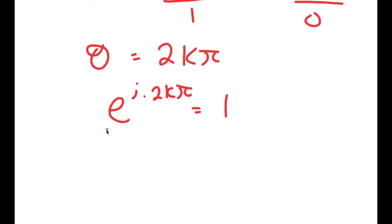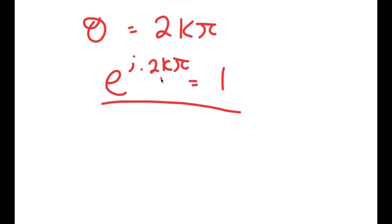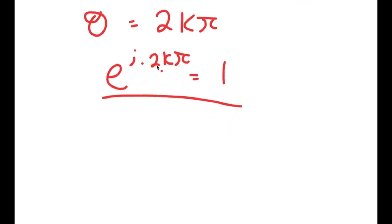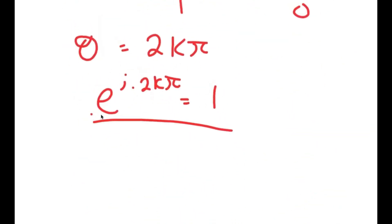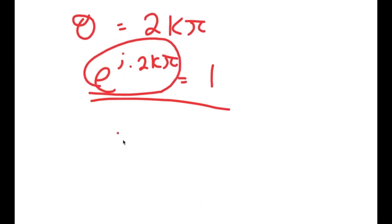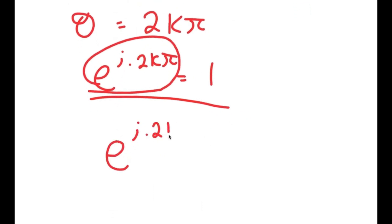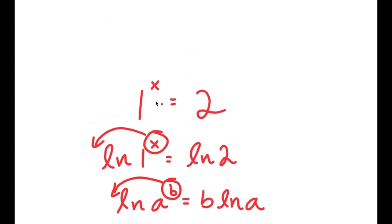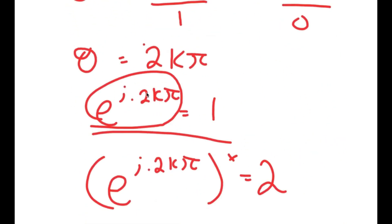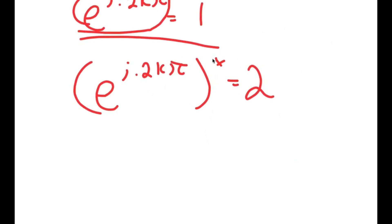Because e^(i·2kπ) = 1 is true, and our original equation was 1 to the power of x equals 2, we can substitute: e to the power of i times 2k pi, all to the power of x, is equal to 2. Now if we solve for this, we should get our variable x.